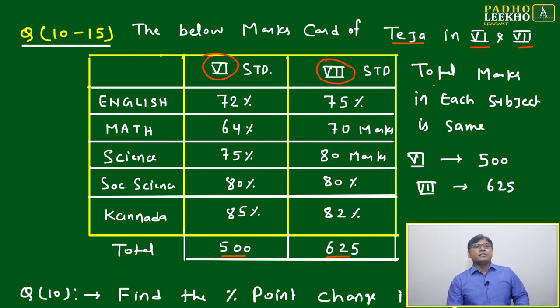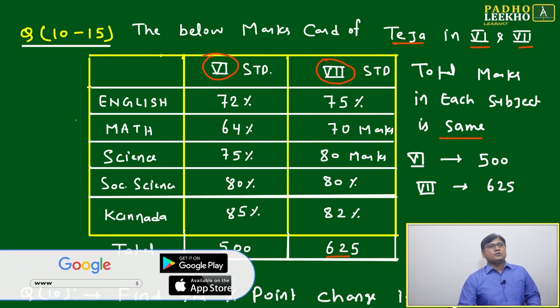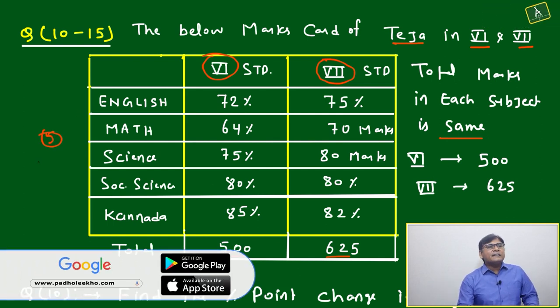One thing is sure: total marks in each subject is the same. How many subjects are there? Total five subjects, and it will be equally divided.